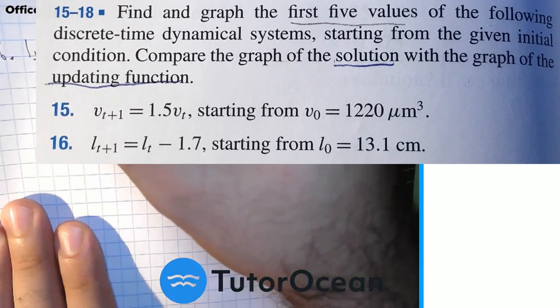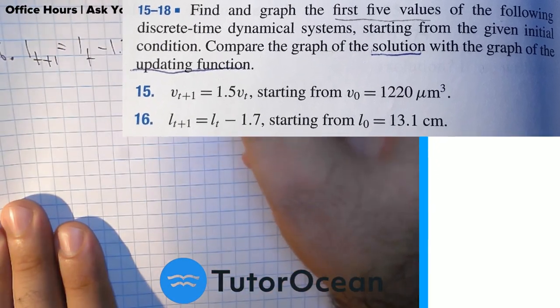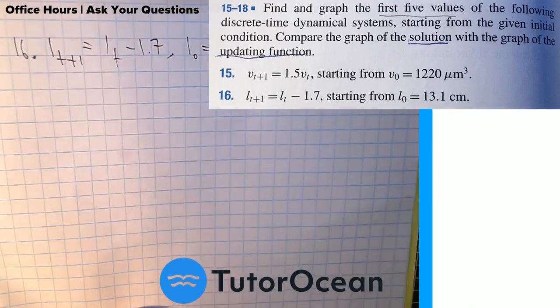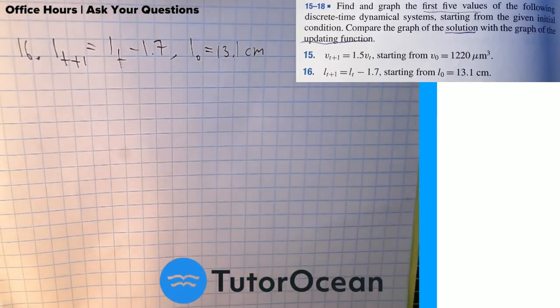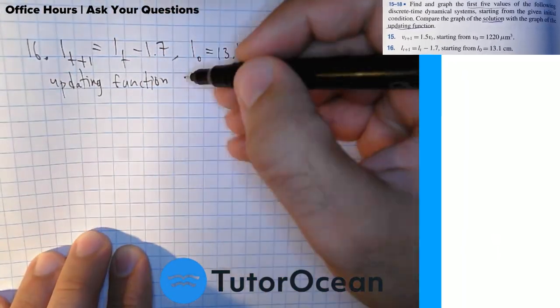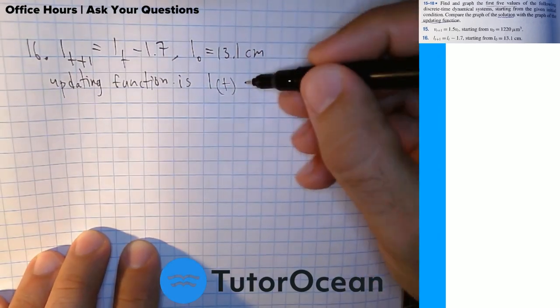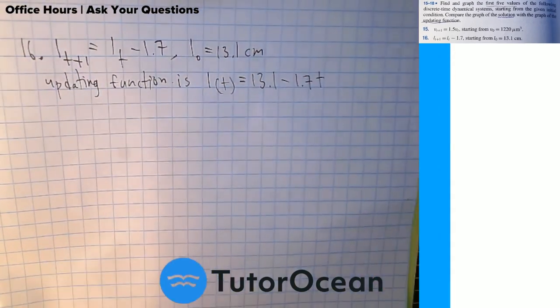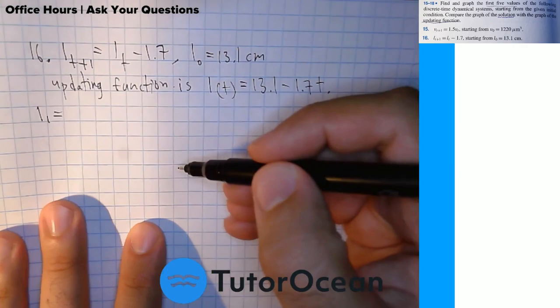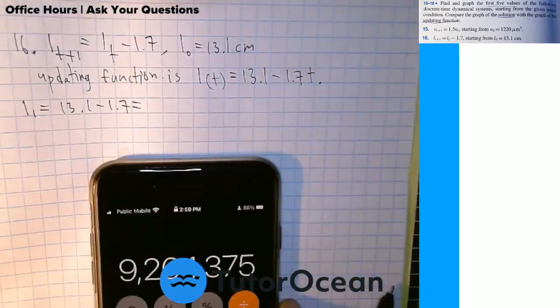This is a first-year calculus question for health science majors. We start with a discrete-time dynamical system. Lt plus 1 equals Lt minus 1.7.